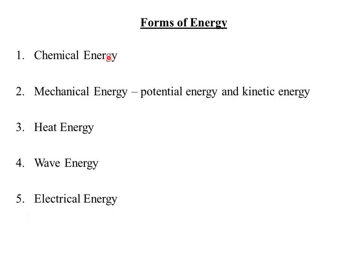Next, we look at the forms of energy. We have five main forms. The first form is chemical energy. Chemical energy is a form of energy contained in substances that can be converted to heat by the process of oxidation — that is, the process of burning a substance. Chemical energy is also found in foods, oils, charcoal, coal, firewood, and biogas.